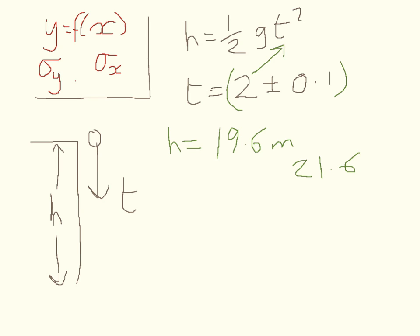And to check that, we can try 2 minus 0.1. So that's half g times 1.9 squared, which is 17.7.